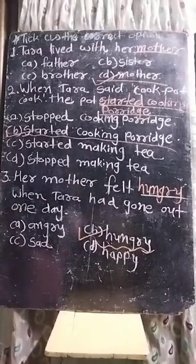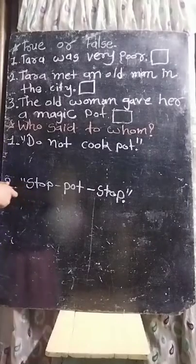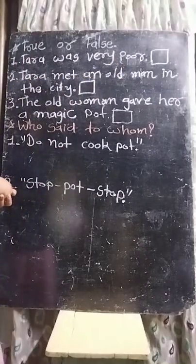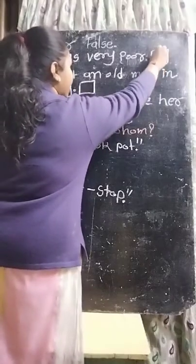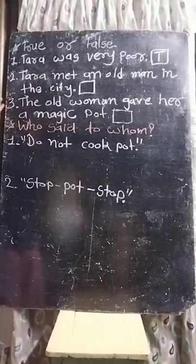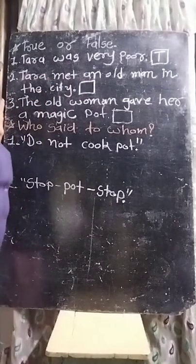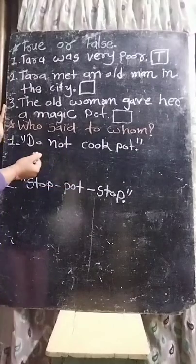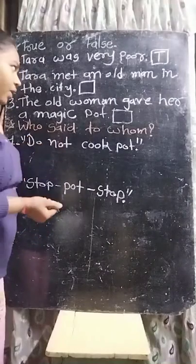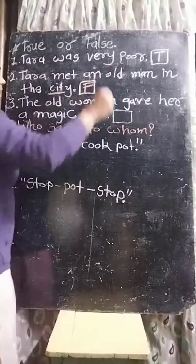Now we will see true or false. First one: Tara was very poor — true or false? True, because Tara was very poor. Second one: Tara met an old man in the city — true or false? False, because Tara met an old woman in the forest, not an old man in the city.